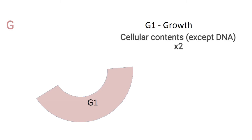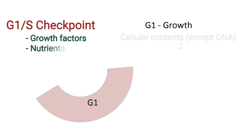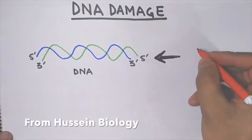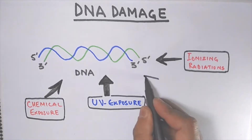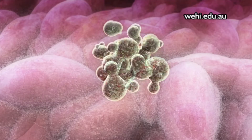Before that, the cell must first encounter the restriction point. The restriction point checks for the presence of growth factors that signal the need for new cells to be made. Without growth factors, the mitotic cell will not undergo division and remains at rest. If growth factors are present, the cell checks for sufficient nutrients to allow for growth, then checks if it has grown to roughly the size of two cells, and finally checks for DNA damage. If nutrients are low or the cell hasn't grown enough, it will wait. But if DNA damage is critical, apoptosis — programmed cell death — occurs.